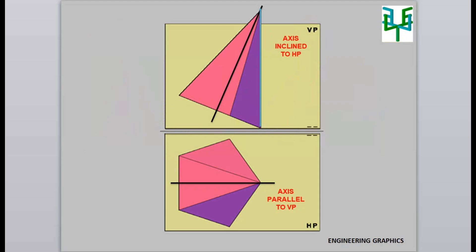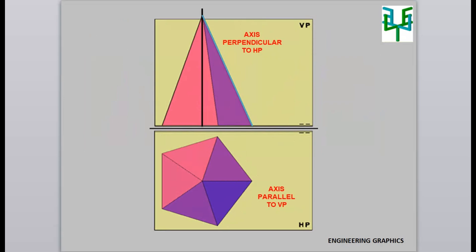While drawing the projections of this case, it can only be drawn in two stages. In the first stage, we have to assume that the axis is perpendicular to HP. The base shape of the pyramid, a pentagon, can be seen in the plan. A pentagon has an odd number of sides. Here the pyramid rests with its base corner, so an edge opposite to this corner will be perpendicular to VP.